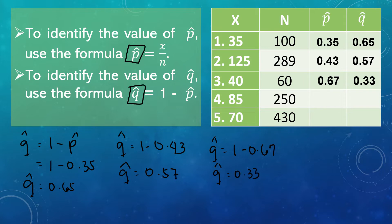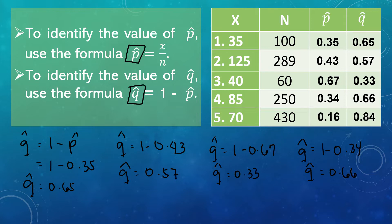For number 4, 85 divided by 250 is equal to 0.34. To find Q-hat, Q-hat equals 1 minus 0.34, which is equal to 0.66. For the last example, 70 divided by 430 is equal to 0.16. To identify Q-hat, 1 minus 0.16 equals 0.84.